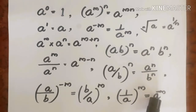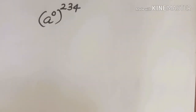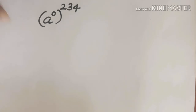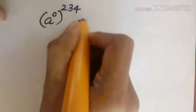This is one of the problems we have to get into in detail. First problem: a raise to 0, all raised to 234. The power is 0 raised to 234. Since any number with exponent 0 equals 1, the answer is 1.